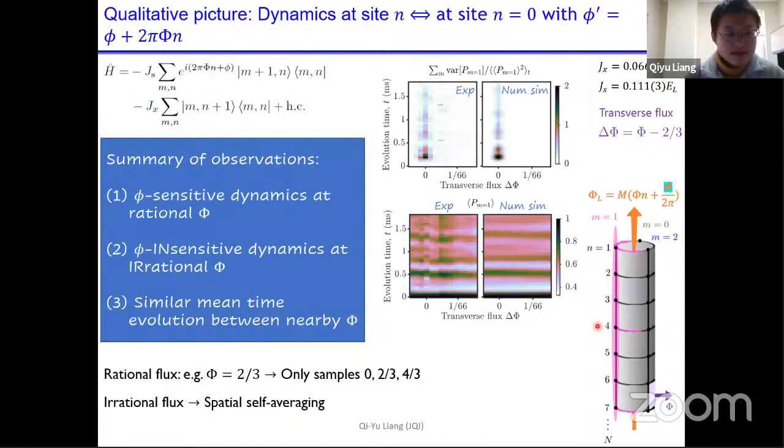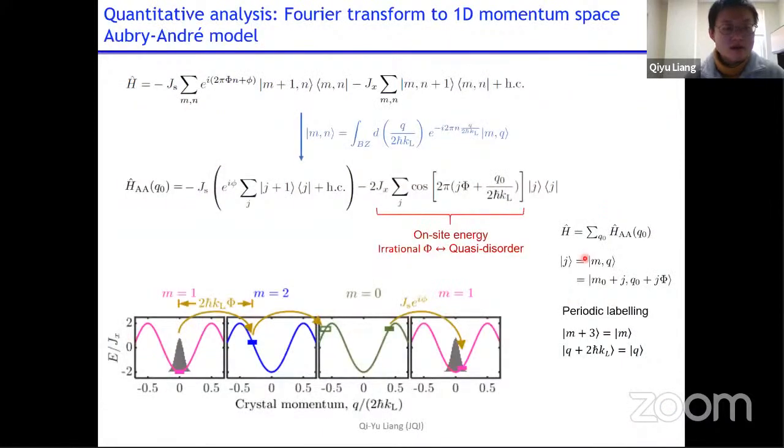However, this simple analysis does not show quantitatively how much variance we expect in the time evolution. To understand that, I will transform to the momentum space. You do a Fourier transform such that the n site will become crystal momentum q. And the resulting Hamiltonian is a series of one-dimensional Aubry-André model in the momentum space. It also has two terms. The first one is hopping between the new lattice site j, and each j index is a certain m state and a momentum state. And second term is onsite energy.